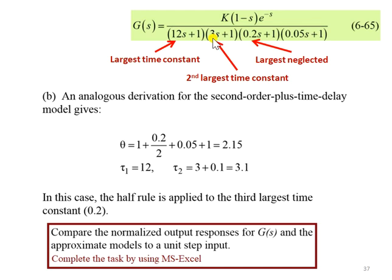The first time constant and the second time constant as the dominant time constant of the system. Therefore, 0.2 has been left out to become the largest neglected.